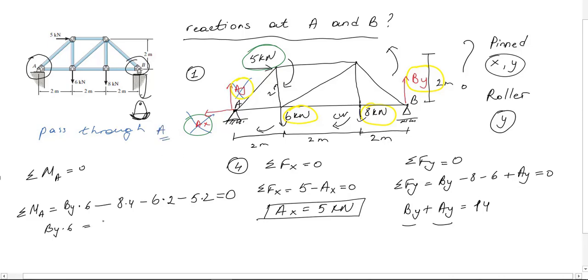Calculating this I get By as nine kilonewton. In previous equation that I couldn't solve because I had two unknowns, now I can subtract By into that equation and get five kilonewton for Ay.